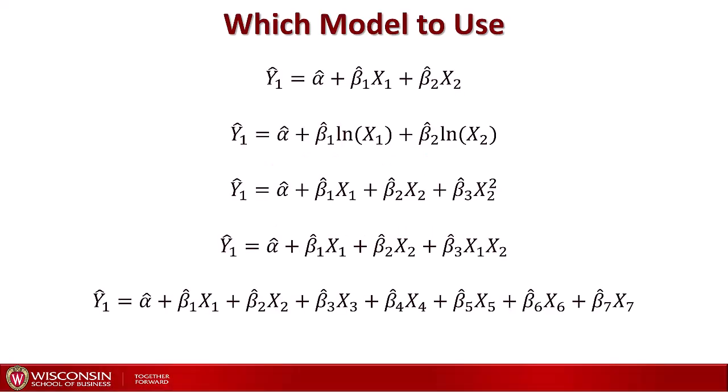Here is an example. Let's say we want to model the relationship between a variable y1 and two explanatory variables x1 and x2. We can use a simple linear model with beta1*x1 plus beta2*x2, or we could transform one or two variables with a log transformation — log of x1 and log of x2 — or we could add a quadratic term with x2, or add an interaction term if the effect of one variable on our prediction depends on the value of the other variable, or we could add a number of other control variables x3, x4, x5, as many as we have in our data set.